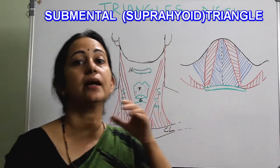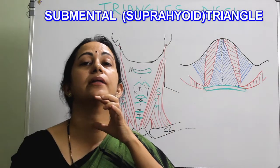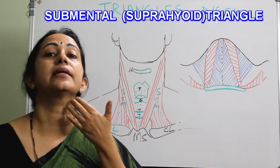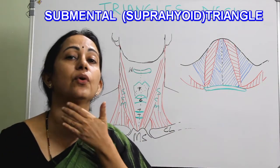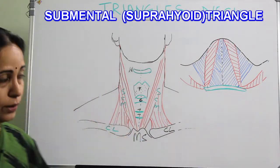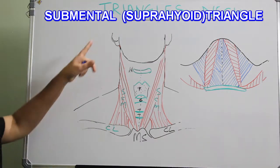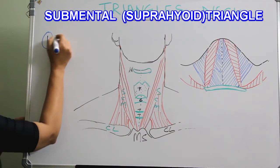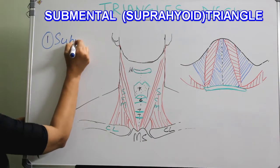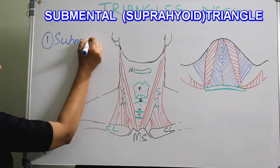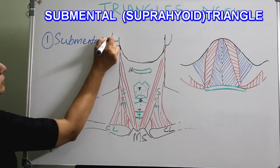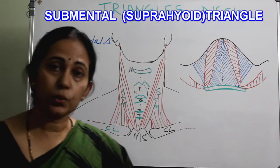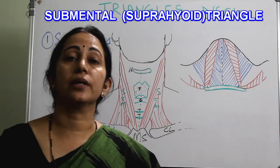With the chin up and the neck extended in this picture, you can get a clear view of the submandibular triangle. Of the anterior triangles of the neck, the first one is the submental triangle.